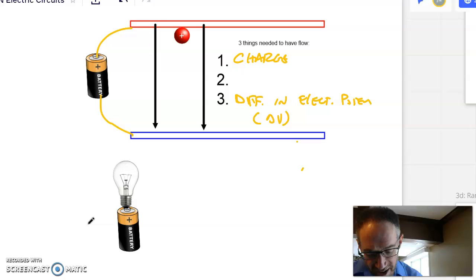And the focus of all of this is I need to have that path. I'm going to call it a closed path or circuit. If I have all of those things, now I can get flow. Now I can get a light bulb to light.